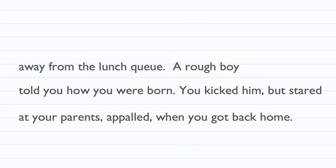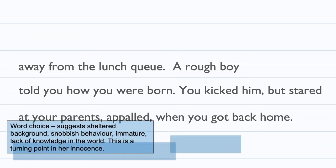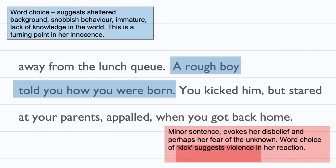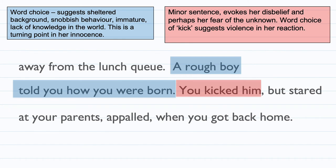The stanza continues: 'a rough boy told you how you were born. You kicked him but stared at your parents appalled when you got home.' This is the turning point in the poem. 'A rough boy' as word choice suggests a sheltered background and snobbish behaviour — she looks down at this boy and is immature, showing a lack of knowledge of the real world. Her innocence is now changing as she learns about things outside the classroom. Her immediate response — 'you kicked him' — is a minor sentence invoking disbelief and fear of the unknown. The word choice of 'kick' suggests violence in her reaction, showing how violently this new fact changed her thinking.